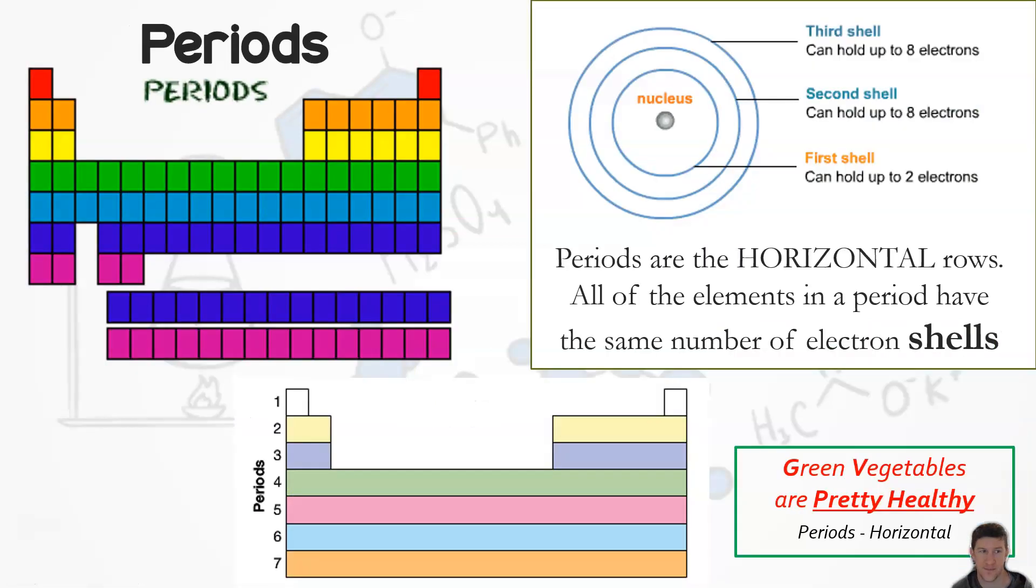So the periods - periods are horizontal. Remember pretty healthy. This is the number of electron shells. So everything in that row, the horizontal, has the same number of shells. So everything here has four shells, three shells, two shells, one shell. So we can use that information to say if you're here you have one shell.